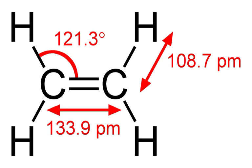Ethylene serves as a hormone in plants. It acts at trace levels throughout the life of the plant by stimulating or regulating the ripening of fruit, the opening of flowers, and the abscission of leaves. Commercial ripening rooms use catalytic generators to make ethylene gas from a liquid supply of ethanol. Typically, a gassing level of 500 to 2000 ppm is used for 24 to 48 hours. Care must be taken to control carbon dioxide levels in ripening rooms, as high temperature ripening has been seen to produce CO2 levels of 10% in 24 hours.